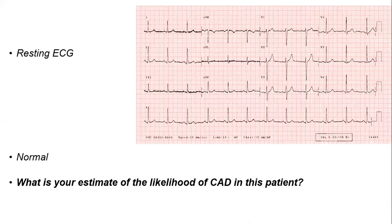In the previous patient, the ECG shown is a normal ECG. The resting ECG is normal, so the next step is to estimate the likelihood of coronary artery disease in such patients — someone who presents with typical angina and a normal resting ECG.